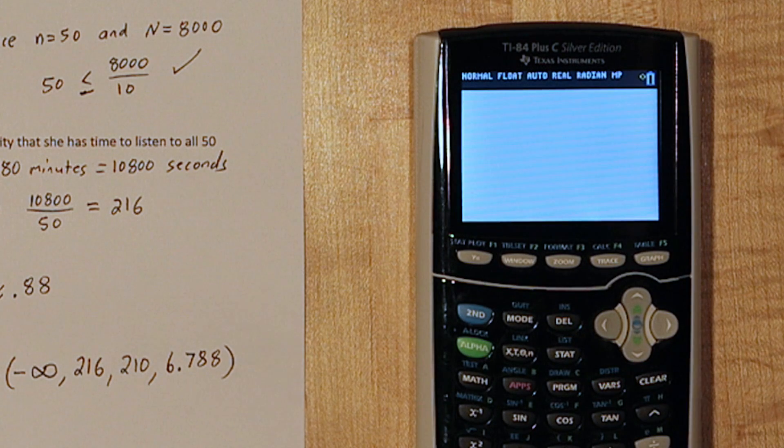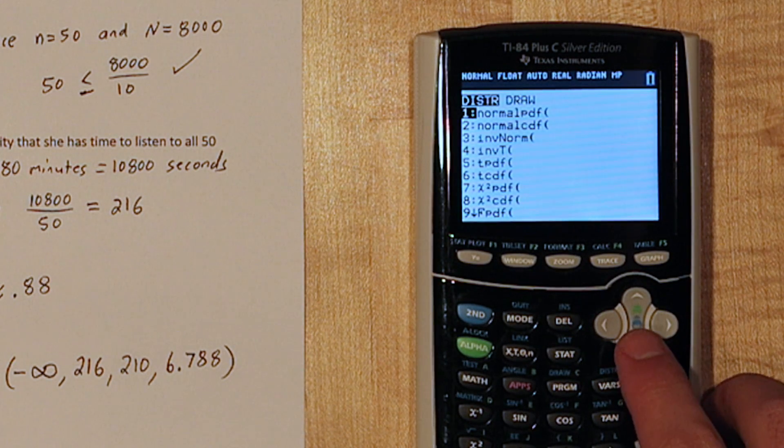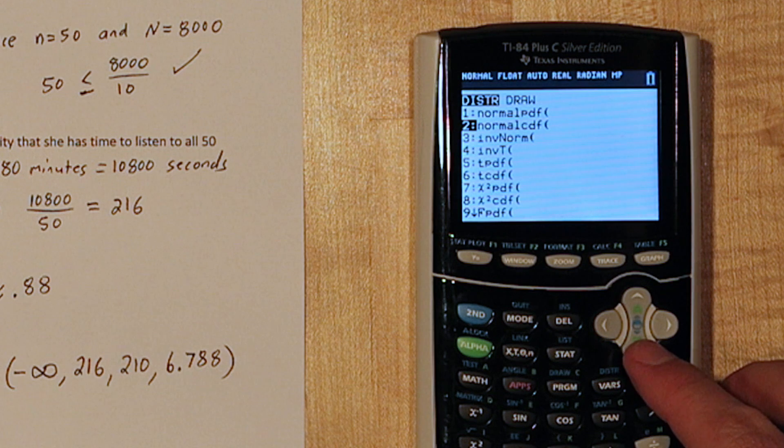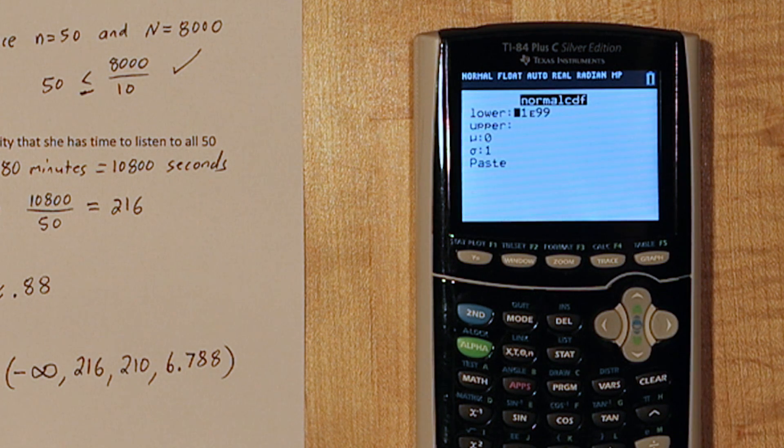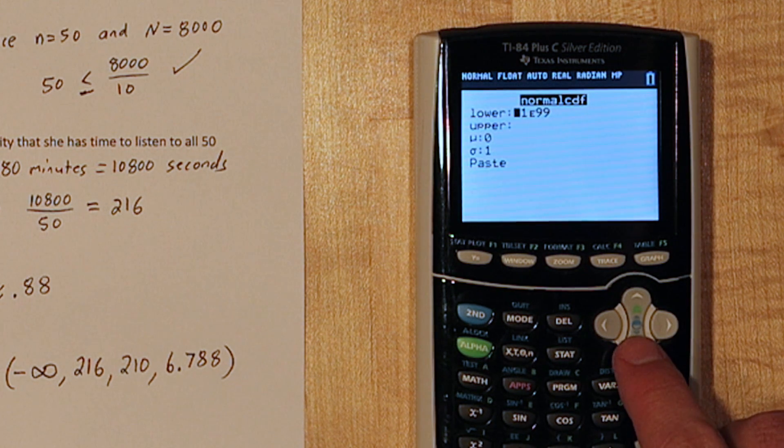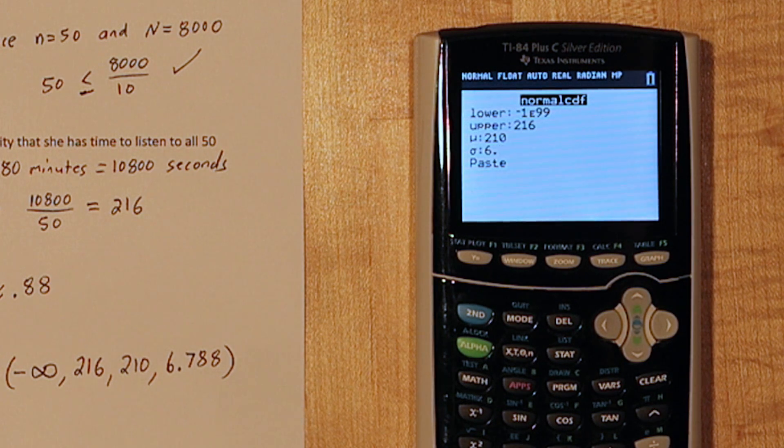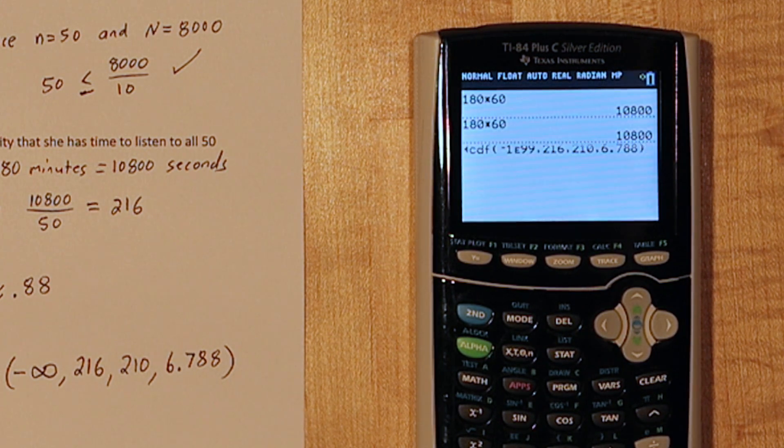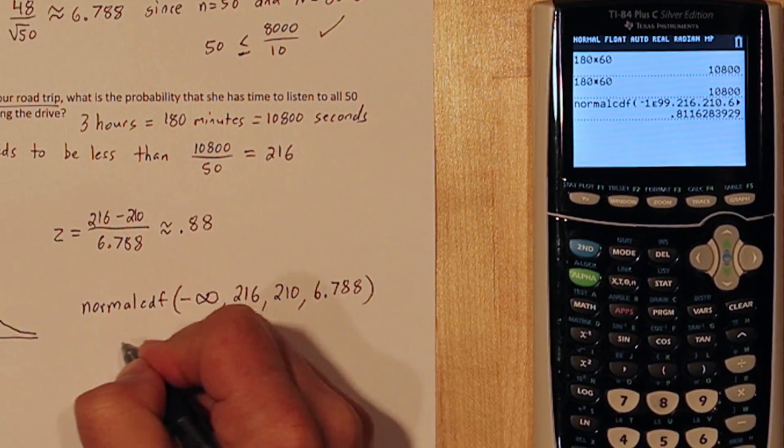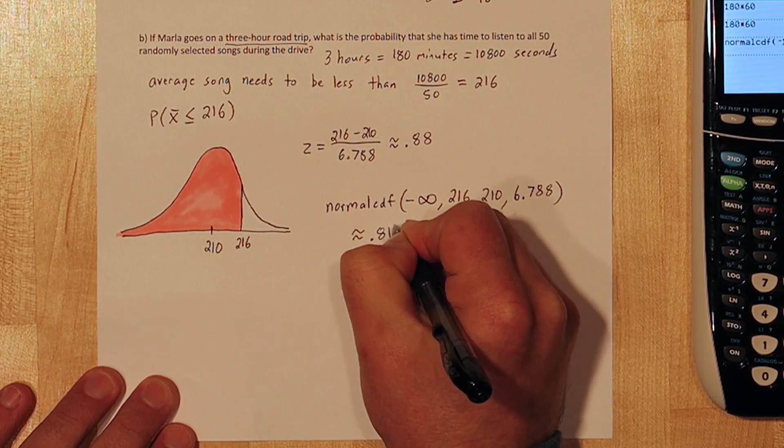Now we're going to do a norm CDF calculation on our calculator. Our lower limit is negative infinity, since we're interested in any sample mean less than 216, our upper limit is going to be 216, our mean is 210, and our standard deviation is 6.788. This gives us a probability of approximately 0.8116.